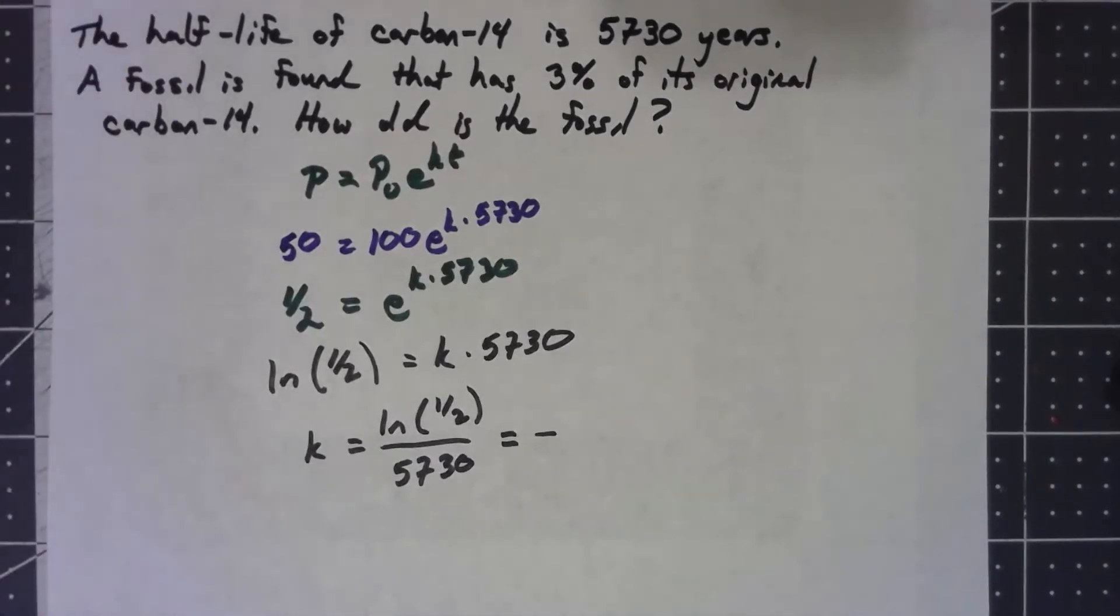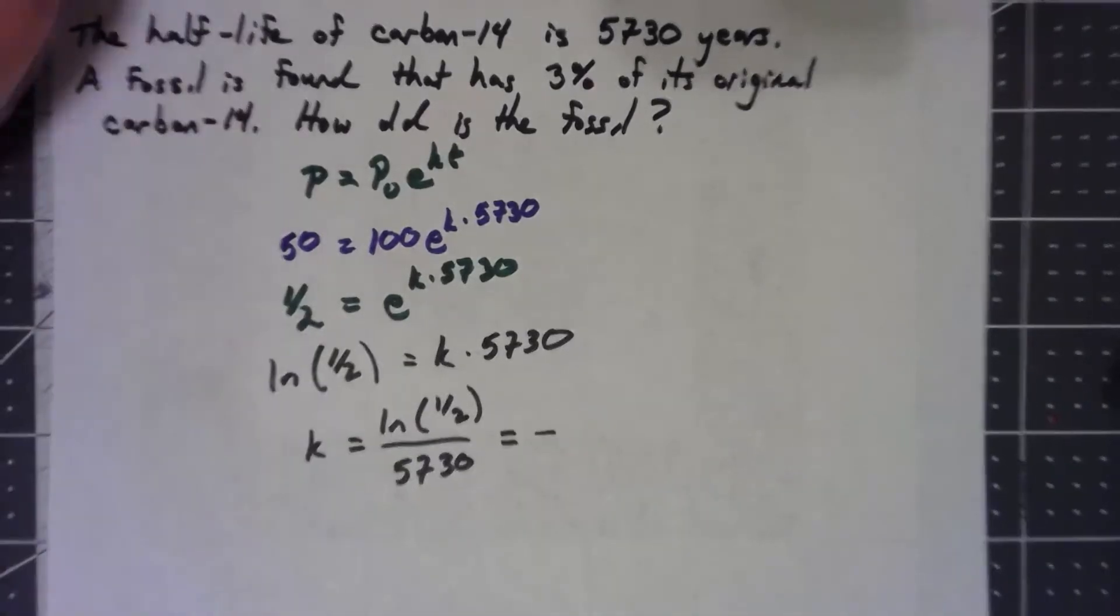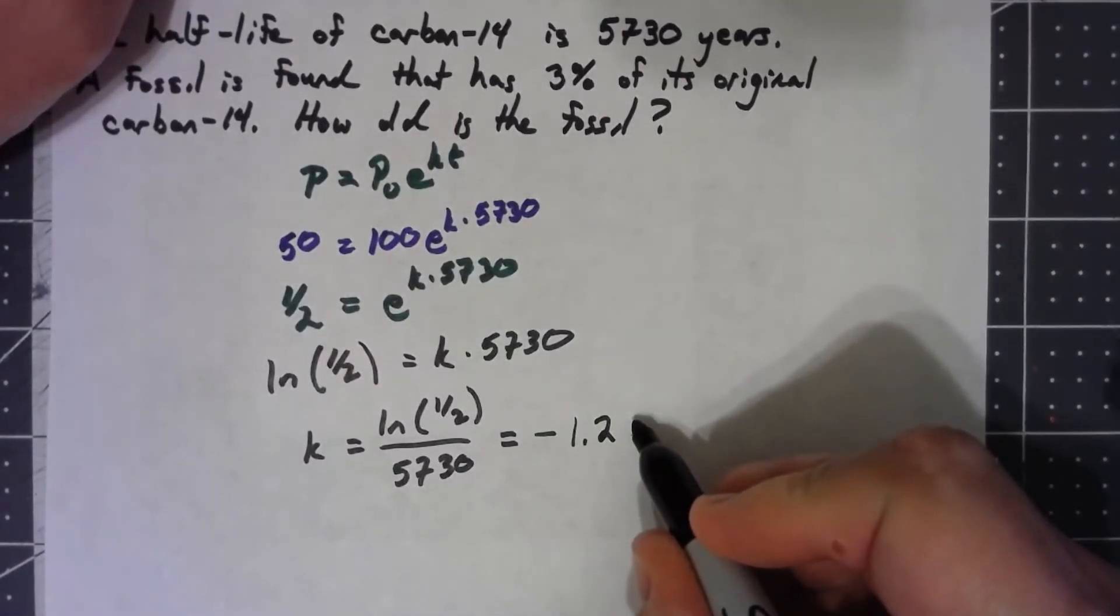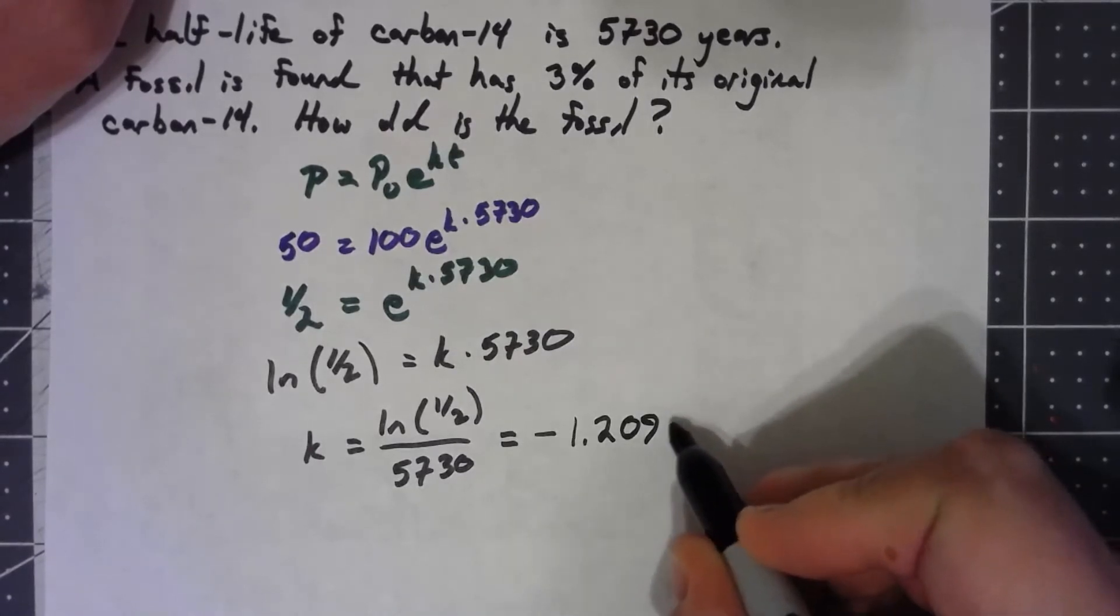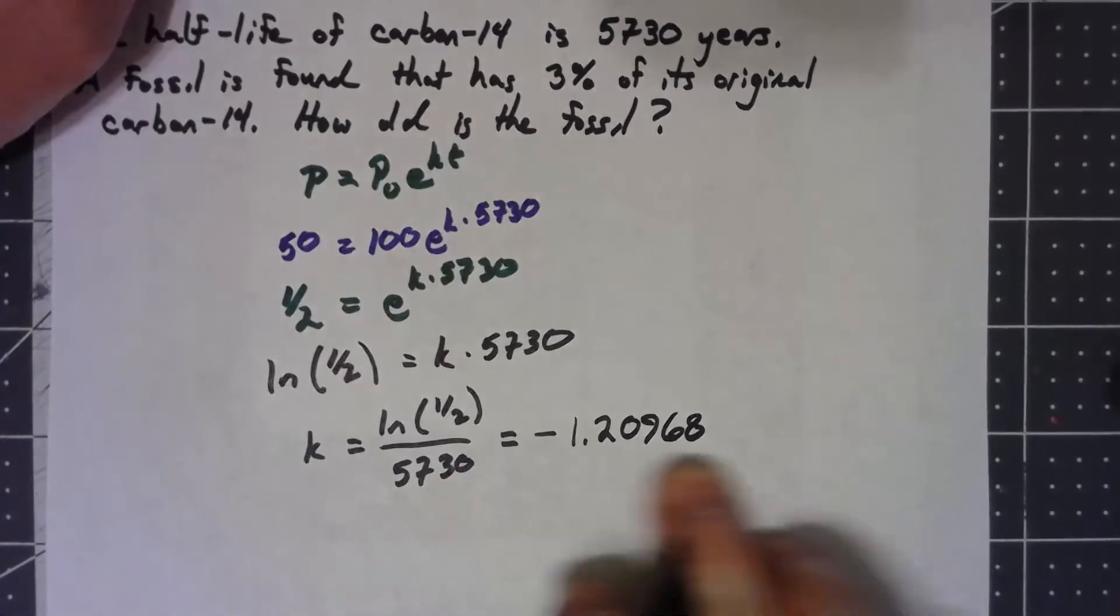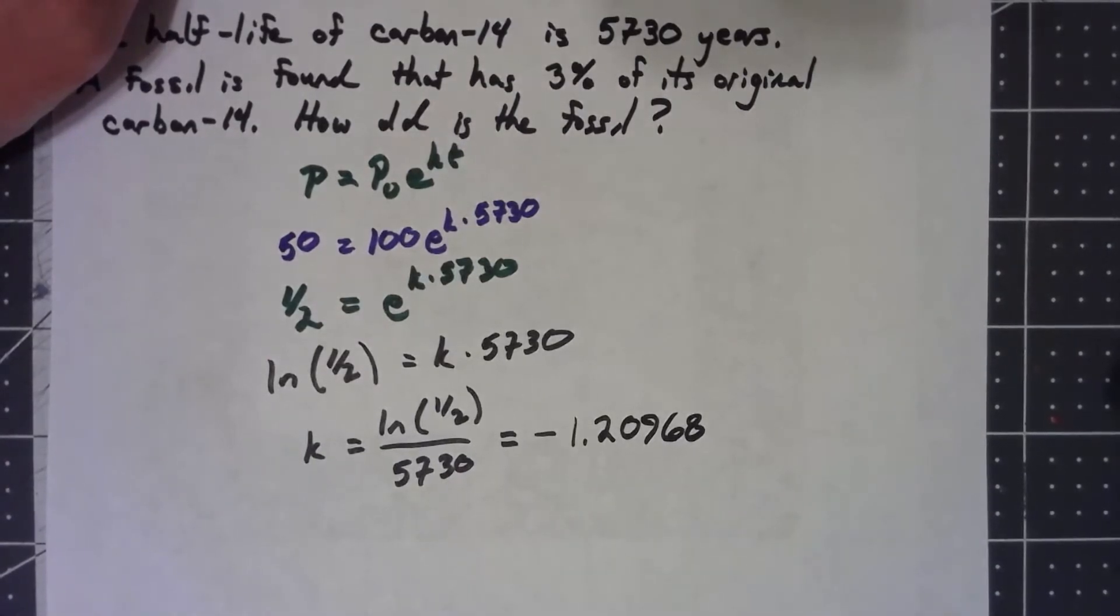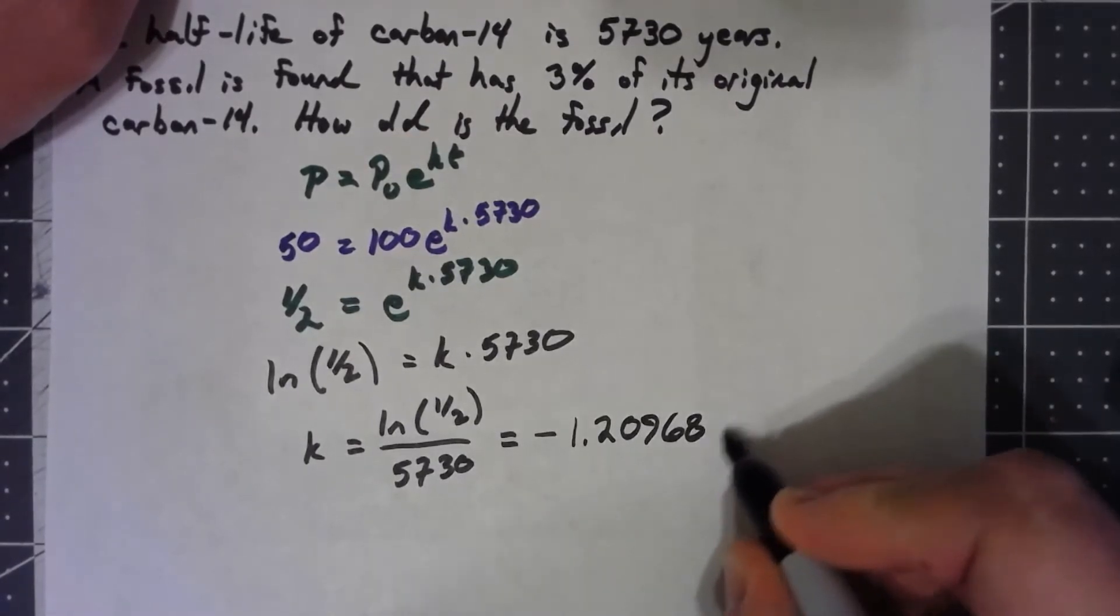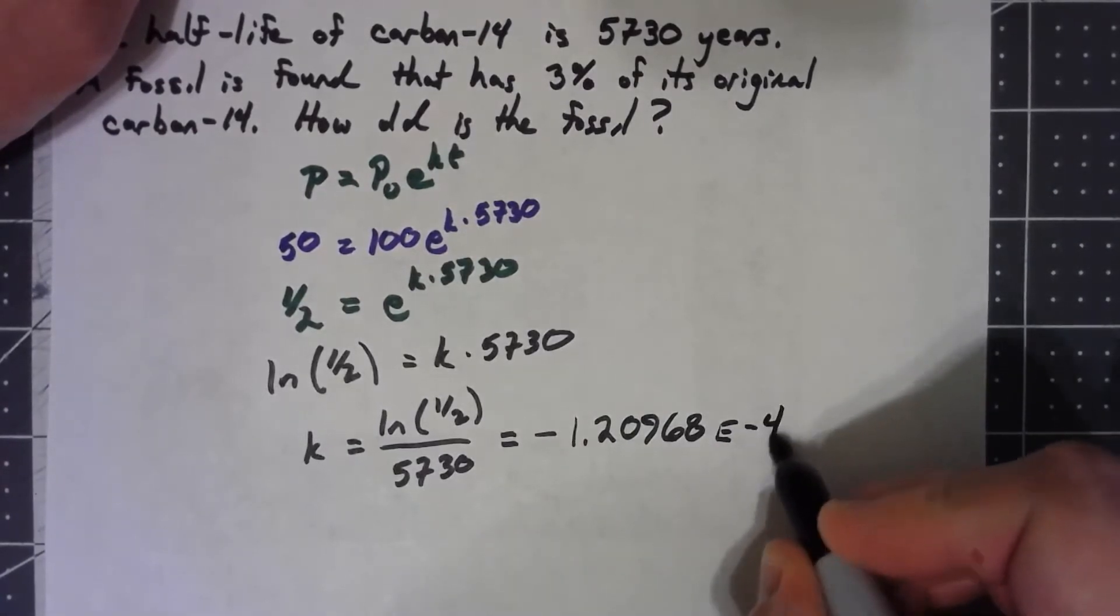The other thing you've got to watch out for is that if you're not careful, I've seen way too many people just read the number off the calculator and they get something like 1.20968. And they try to do the problem using that number. The problem is, if you actually look carefully, at the end, it depends on what your calculator is, but it'll probably say something like e negative 4.